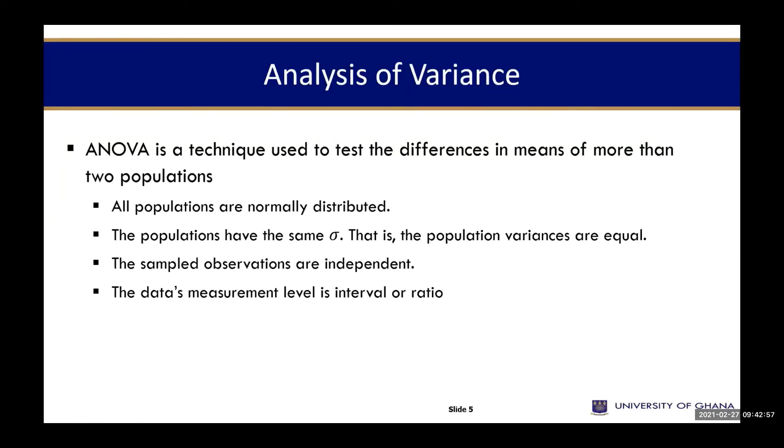We are saying that there are assumptions to every statistical test that we choose to use. ANOVA is a technique used to test the differences in means of more than two populations by definition. Why and when do we use ANOVA? It is subject to these assumptions, these four assumptions. And this could be a multiple choice question.